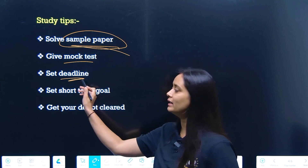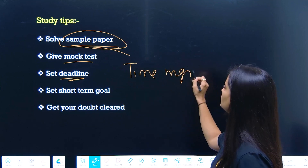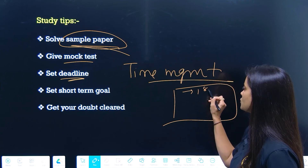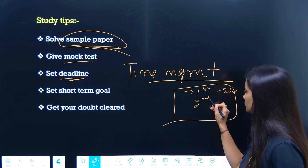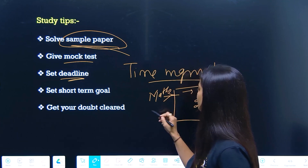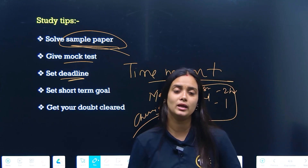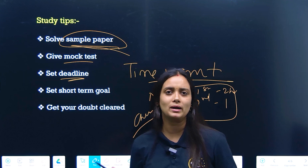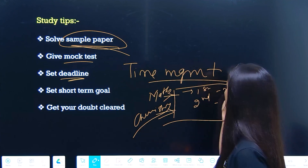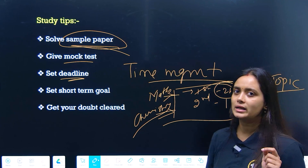Time management is very important, and setting deadlines is key. Whenever you study a topic, don't just read all day without structure. Set a deadline: for example, this topic gets 2 hours, the next topic gets 1 hour, maths gets 2 hours, chemistry gets 1 hour. Set deadlines for yourself — 'I will complete this topic in 2 hours.' Without deadlines, you may end up covering only one chapter all day.